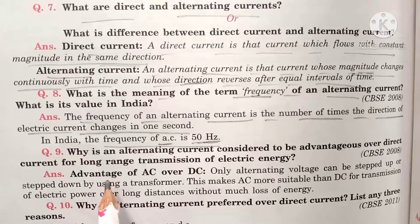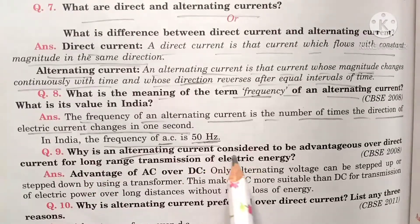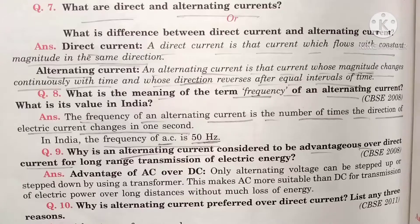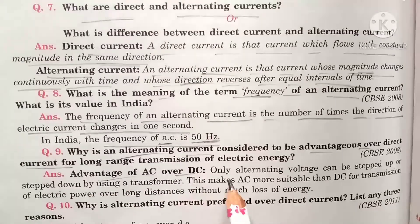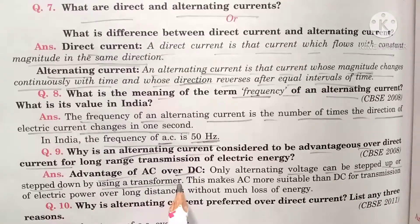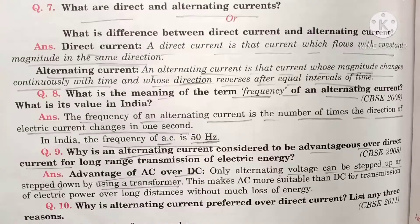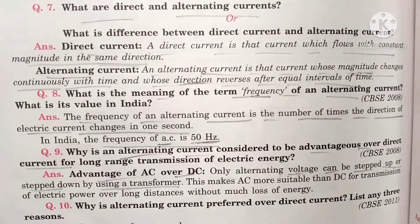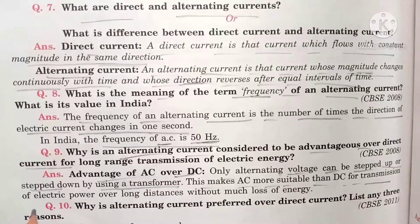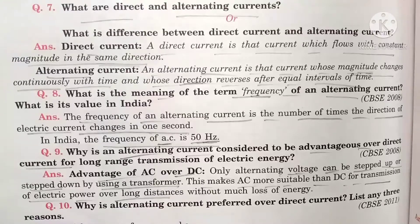Next important question: what are the advantages of AC over DC? Alternating current is better than direct current. Only alternating voltage can be stepped up or stepped down by using a transformer.